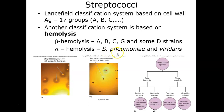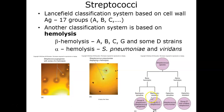Alpha hemolysis represents an incomplete breakdown of blood cells — you get a little halo but not complete clearing. These include members of the Streptococcus pneumoniae group and the viridans streptococci group. Beta hemolytic streptococci cause a complete breakdown or lysis of red blood cells, and these include groups A, B, C, G, and some of the D group. Group A strep includes Streptococcus pyogenes, which is sensitive to the antibiotic bacitracin, while group B and C strep are resistant to bacitracin.